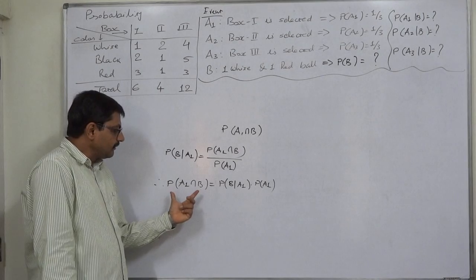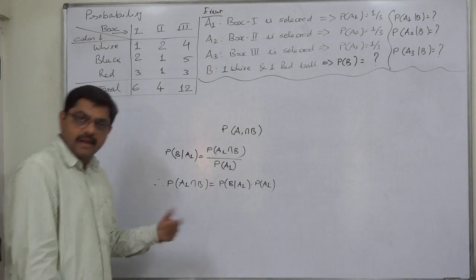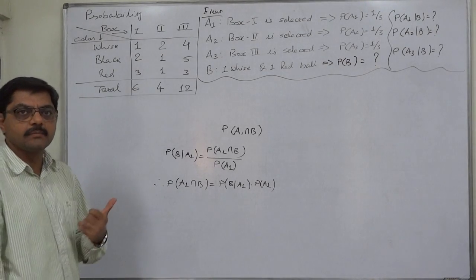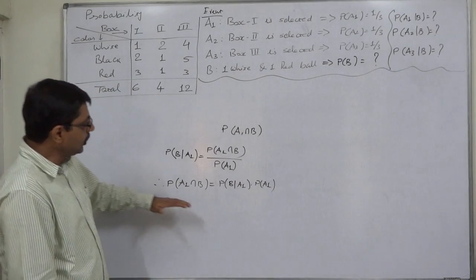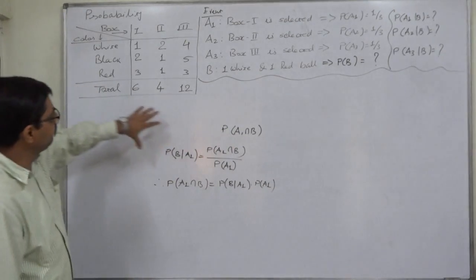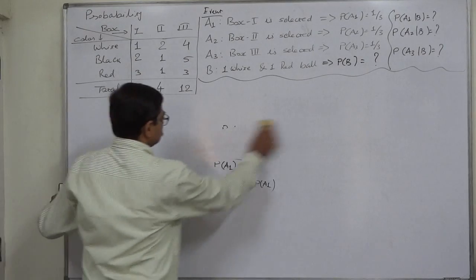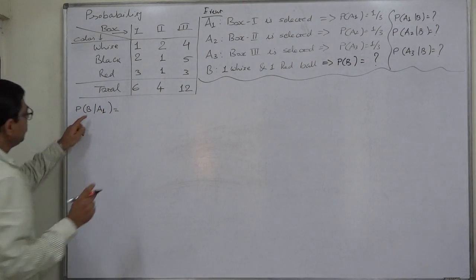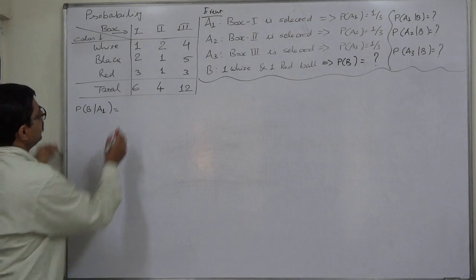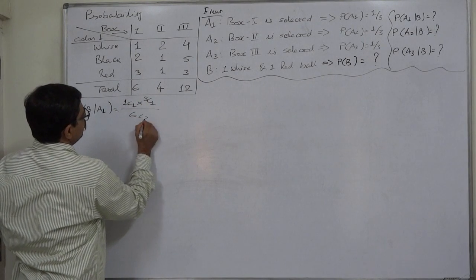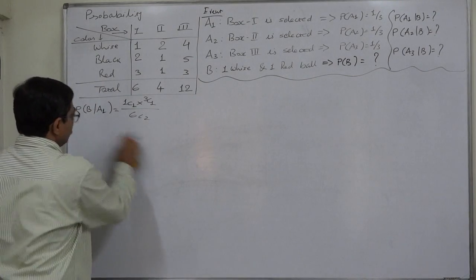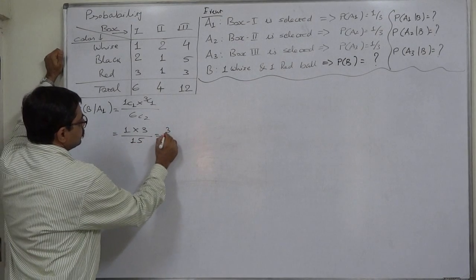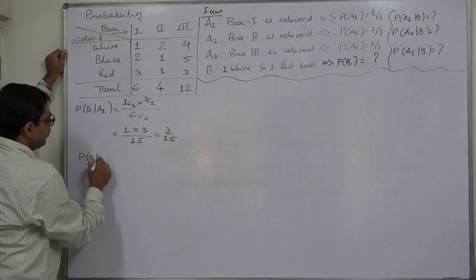Then we can find P(A1 ∩ B). Similarly we find P(A2 ∩ B) and P(A3 ∩ B). The addition of all three joint probabilities gives P(B) — the probability of selecting one white and one red ball from the entire scenario. Let us calculate P(B|A1): one white ball chosen as 1C1 and one red ball chosen as 3C1, upon 6C2. That gives 1 × 3 / 15 = 3/15 = 1/5. P(B|A2): one white out of two as 2C1 and one red out of one as 1C1, upon 4C2 = 6. That gives 2/6 = 1/3.